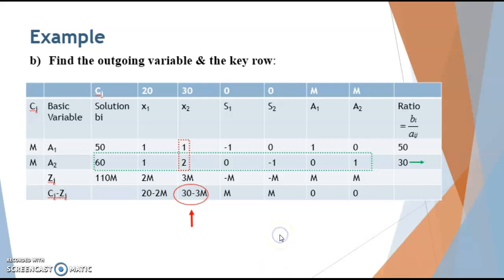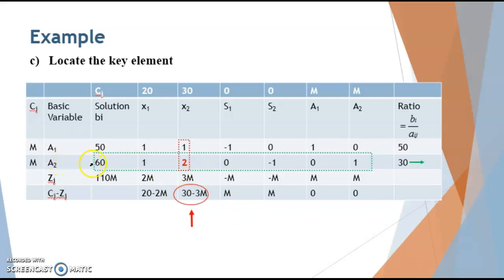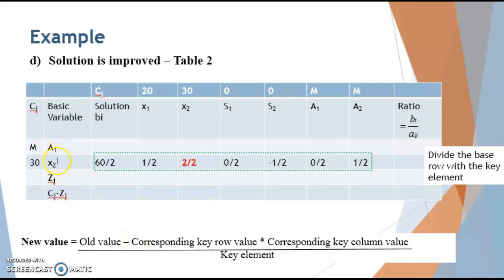The key element is 2. To improve the solution, we divide the key row by the key element. So the entire row is divided by 2. Now x2 enters as a basic variable and a2 exits the simplex table. The coefficient of x2 in the objective function is 30. In the next table, x2 is entered with its coefficient and the entire base row is divided by the key element 2.